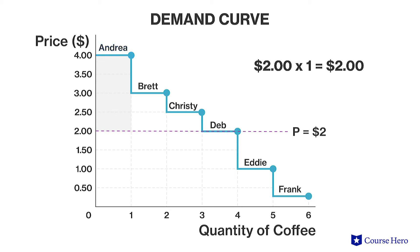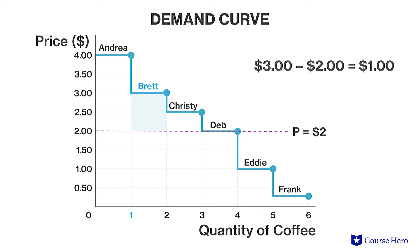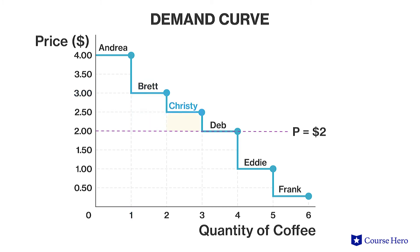We can do this for each of the other consumers who are participating in this market. For Brett, the base of his step is also 1. The height of his step is $1 because he's willing to pay $3 but only has to pay $2, so Brett's consumer surplus is $1. For Christy, her consumer surplus is 50 cents times 1, which is equal to 50 cents.